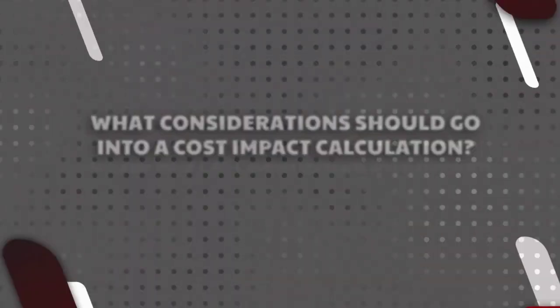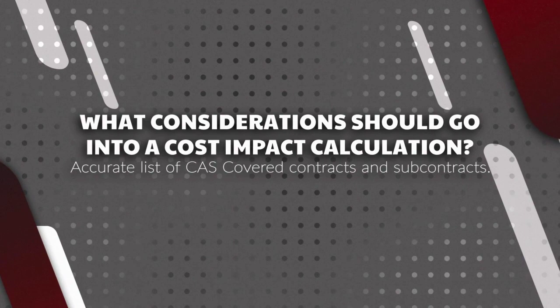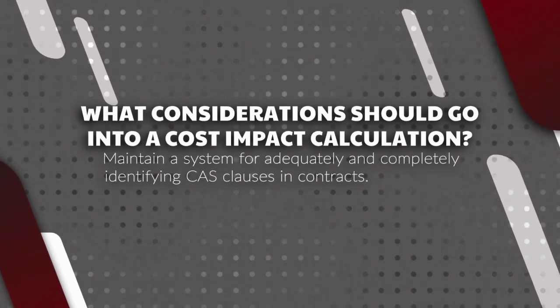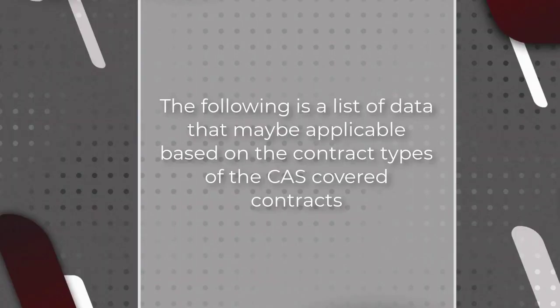What considerations should go into a cost impact calculation? An integral part of the cost impact proposal is the list of CAS-covered contracts and subcontracts that are or will be affected by the change or non-compliance. To comply with the requirements of FAR 52.230-6, contractors should maintain a system for accurately and completely identifying all contracts and subcontracts containing the CAS clause. A detailed cost impact should have data at the contract or subcontract level.